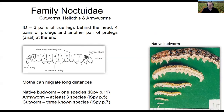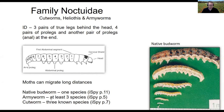Noctuids are a large group of caterpillars that include many broadacre cropping pests: cutworms, native budworm, and armyworms including fall armyworm. Their typical structure includes a head with chewing mouthparts, three pairs of legs at the front, four pairs in the middle, and one pair at the back. Caterpillars missing middle legs are likely loopers — a different group. Native budworm is harder to diagnose when small and newly hatched, as shown in photos here.